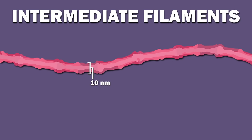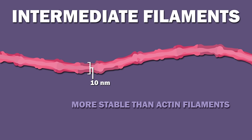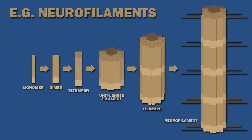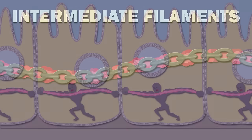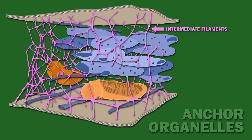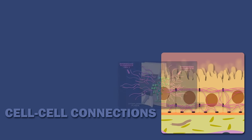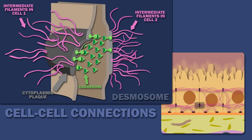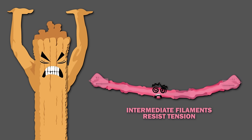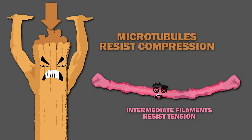Intermediate filaments are 10 nanometers in diameter and are more stable than actin filaments. They are composed of intermediate filament proteins, which are a diverse family of elongated and fibrous proteins — you can think of them as cables. They help the cell maintain its shape by bearing tension, anchor organelles, and structure the nuclear lamina. They are important in epithelial tissues, where, together with proteins and desmosomes, they form cell-to-cell connections. While intermediate filaments resist tension, microtubules mostly resist compression.